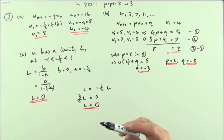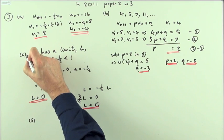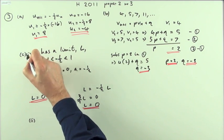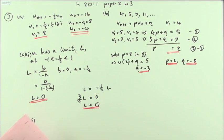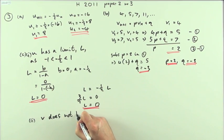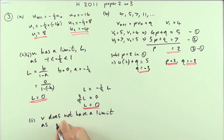And for part 2, that was actually part 1 there. Part 2 said, why does the other sequence not have a limit? V does not have a limit, as the multiplying factor 2 is greater than 1.